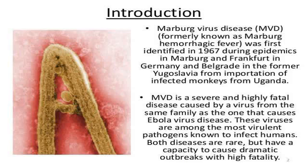A maculopapular rash, petechiae, purpura, ecchymosis, and hematomas due to fluid redistribution, hypotension, disseminated intravascular coagulation, and focal tissue necrosis are hallmark findings. Clinical phases of Marburg Hemorrhagic Fever's presentation are described below. Note that phases overlap due to variability between cases.